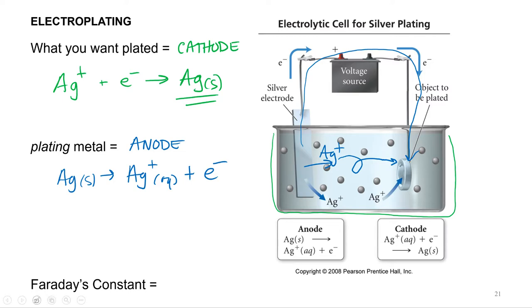Now, to do calculations involving electroplating, a very useful constant is called Faraday's constant. And what Faraday's constant is, is the charge of one mole of electrons. So we can calculate Faraday's constant using Avogadro's number and the charge on the electron.